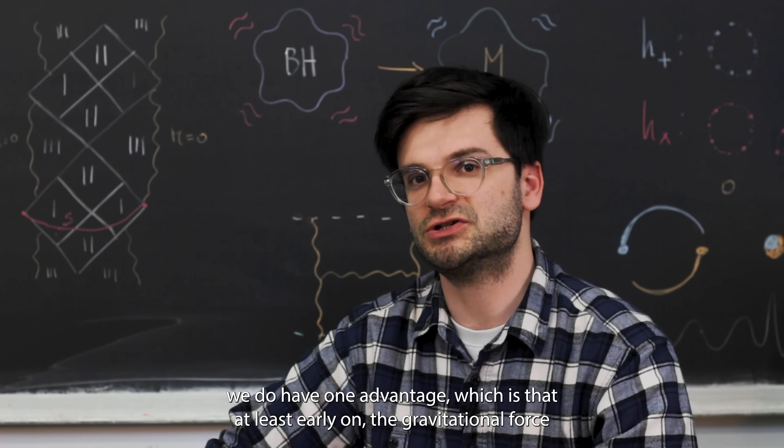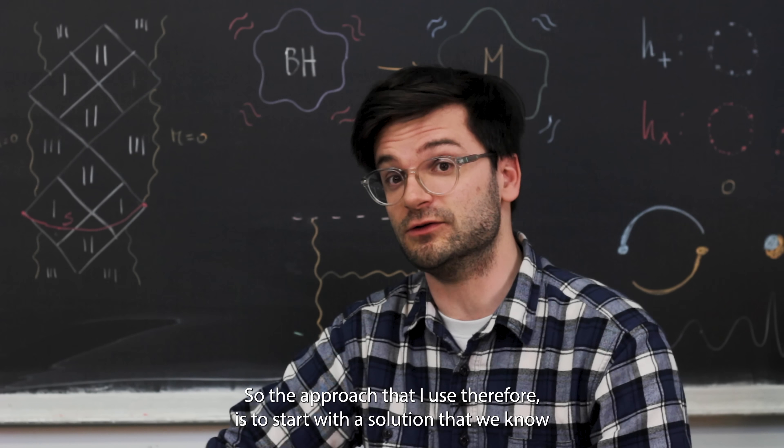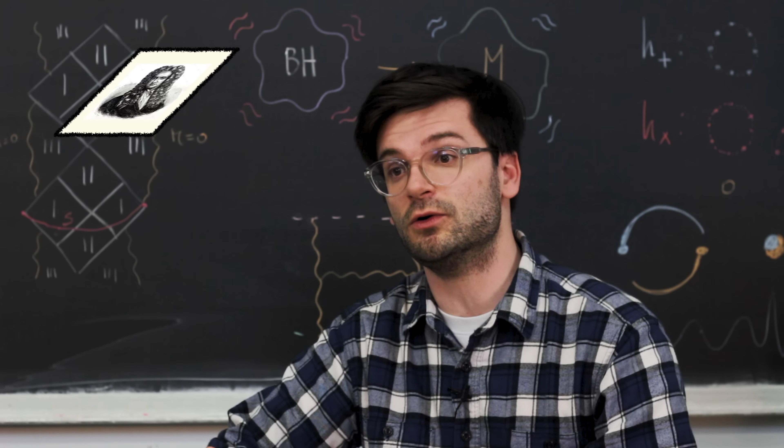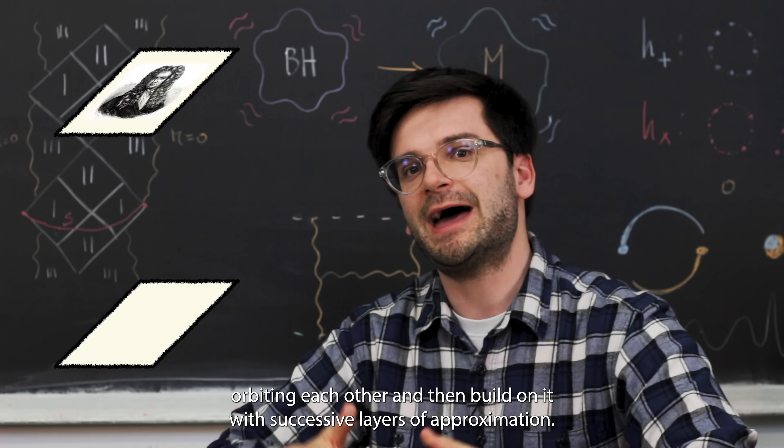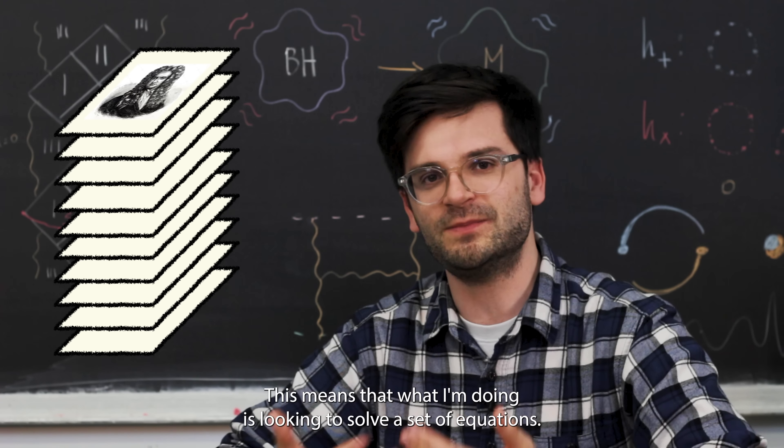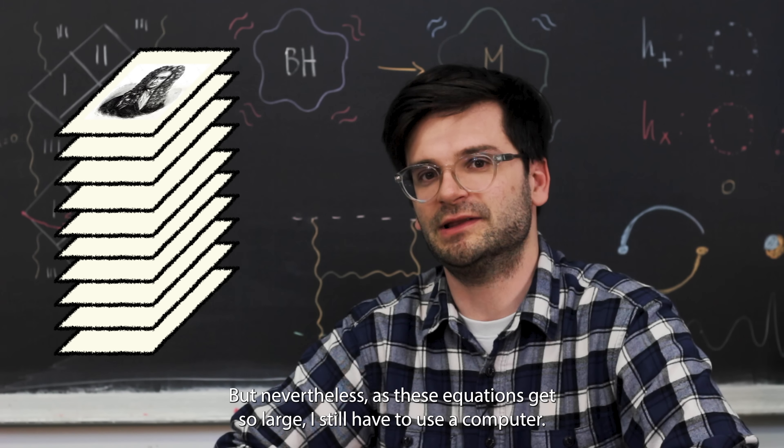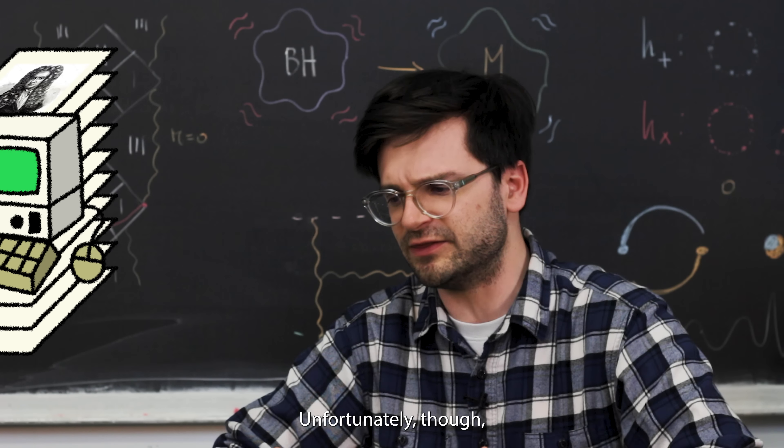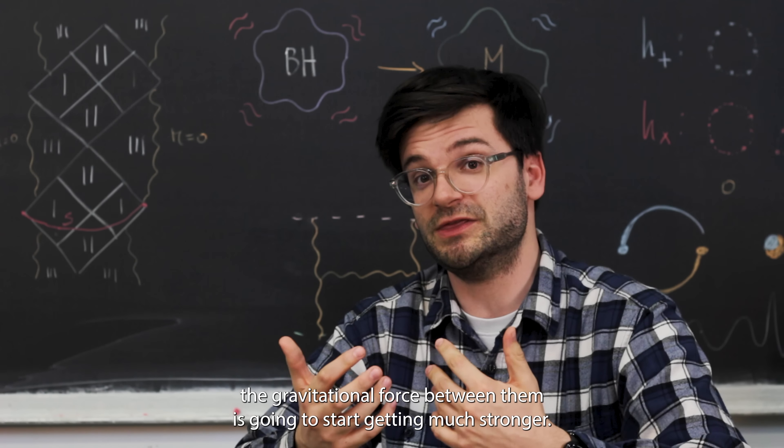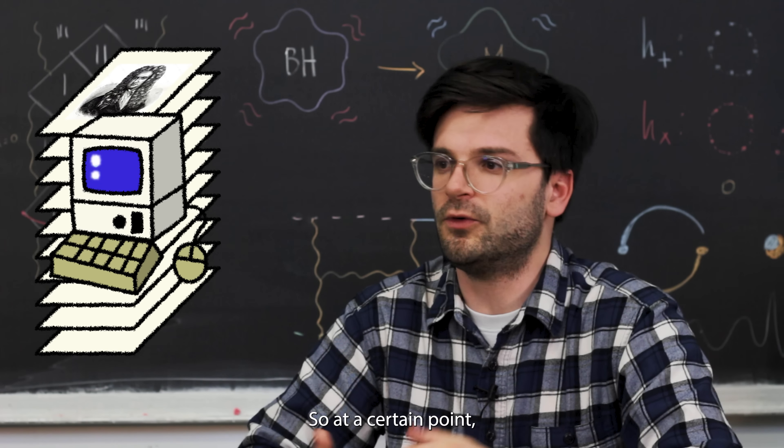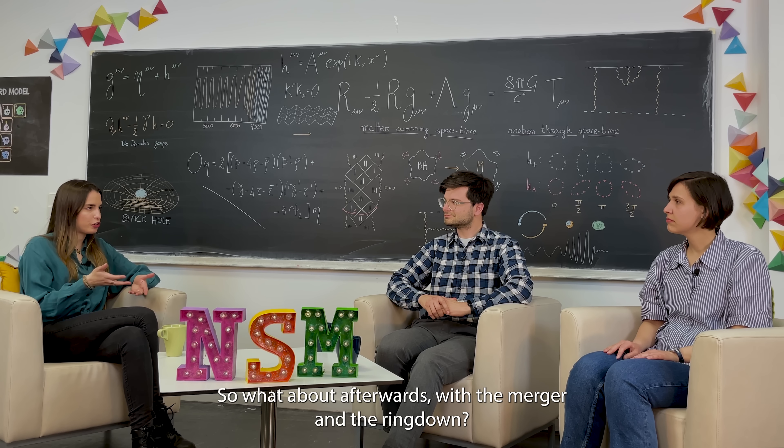Starting from the inspiral, how do we obtain the waveform for this stage, Gustav? Well, for the inspiral, we do have one advantage, which is that at least early on, the gravitational force between our two black holes and neutron stars is still comparatively weak. So the approach that I use, therefore, is to start with a solution that we know in Newtonian physics, where we can exactly model these two bodies orbiting each other, and then build on it with successive layers of approximation. This means that what I'm doing is looking to solve a set of equations, but nevertheless, as these equations get so large, I still have to use a computer. Unfortunately, though, as our two black holes and neutron stars get closer together, the gravitational force between them is going to start getting much stronger. So at a certain point, this method will break down, and we'll have to look towards other approaches.